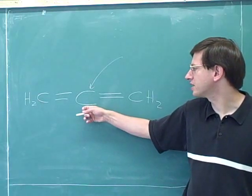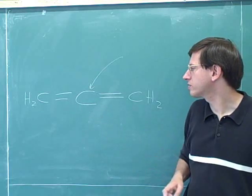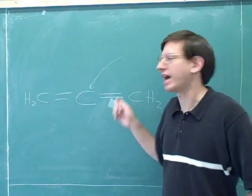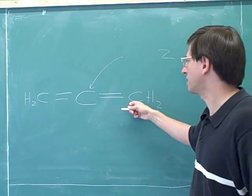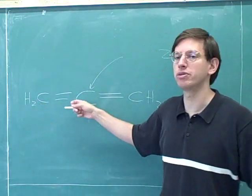What is the hybridization of this carbon? Well, let's use our rule. This carbon is attached to two atoms. It's attached to a carbon here and a carbon here. And it has no lone pairs.